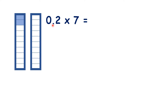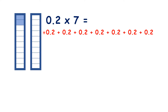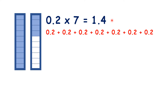So what is 0.2 times 7? Well, what we're really doing here is adding 0.2 seven times. So we have 2 tenths here, and if we times that by 2, 3, 4, 5, 6, and 7, we have 1 and 4 tenths, or 1.4, as our answer.